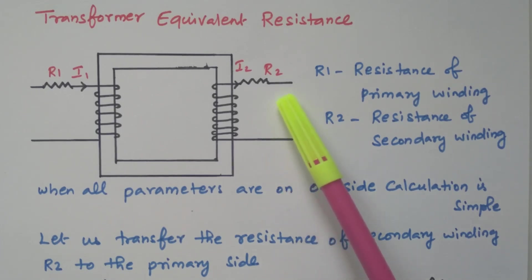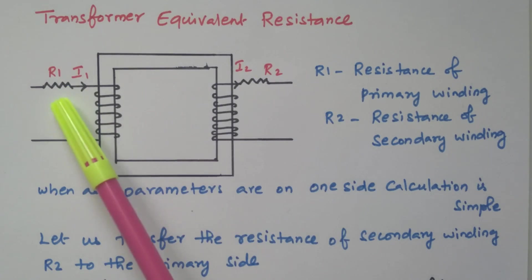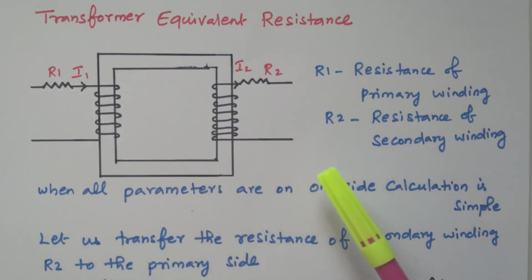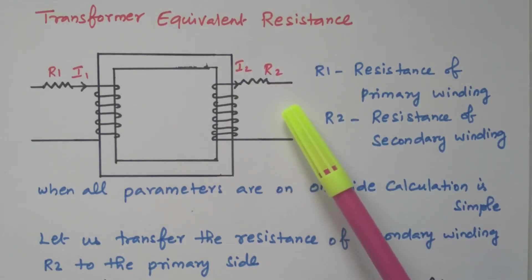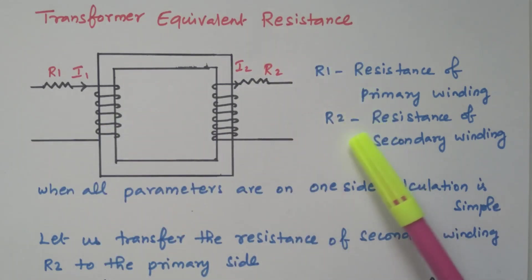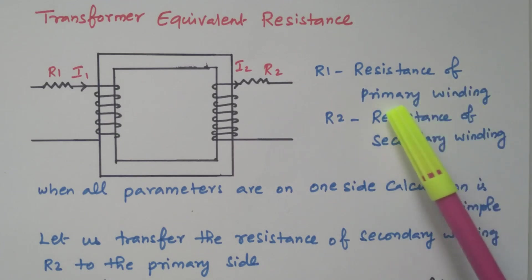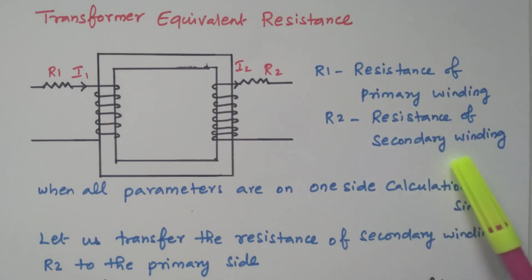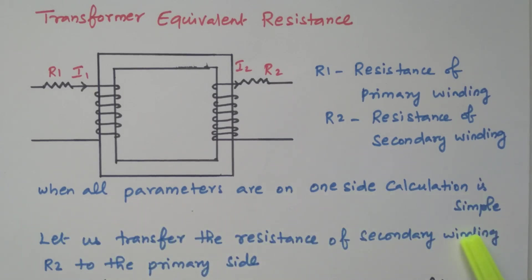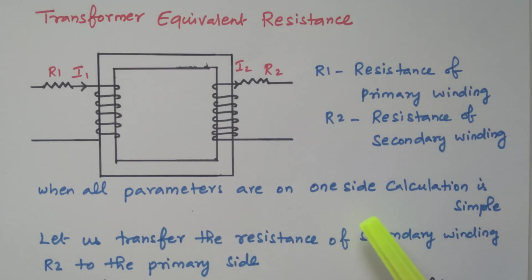Suppose we can transfer this secondary resistance R2 into the primary, and similarly the primary resistance into the secondary. At that time we need to find the equivalent resistance. When resistances are transferred from secondary to primary or primary to secondary, there is an equivalent resistance and equation available. If you transfer all parameters to one side — either primary side or secondary side — the further calculation will be simpler. That is why we are transferring the parameters.